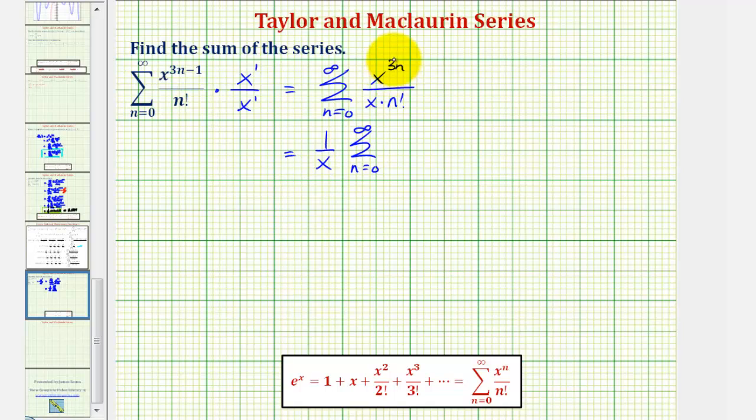it'd be better if we had an exponent of n, so let's write x to the power of 3n as x to the third to the power of n divided by n factorial.